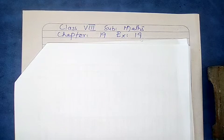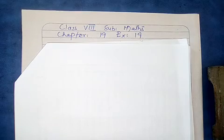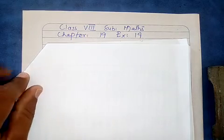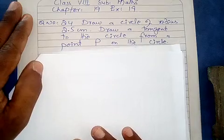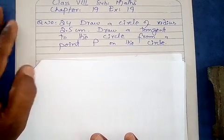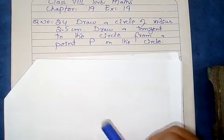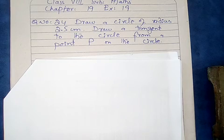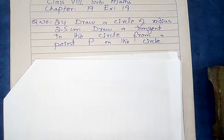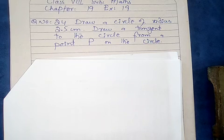We are considering what the question says. Question number 24 is in front of you. Question number 24 says: draw a circle of radius 2.5 cm. ایک circle بنانا ہے 2.5 cm کا۔ Then draw a tangent to the circle from a point P on the circle.